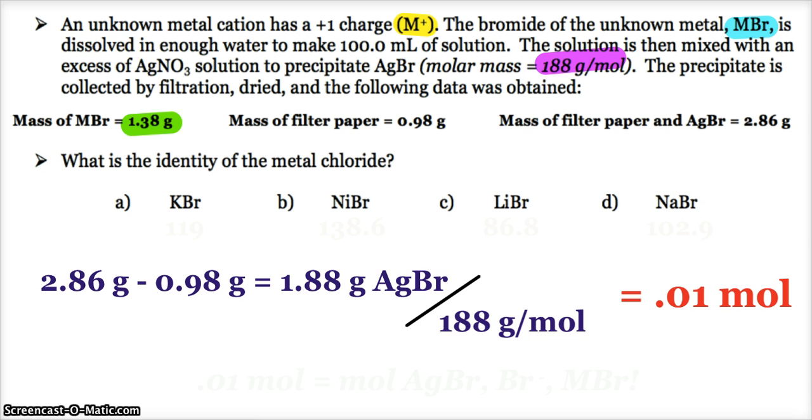Well, since it's a plus one, minus one, one-to-one mole ratio compound, that also tells me that there's 0.01 moles of silver ions, and there's 0.01 moles of bromide ions.